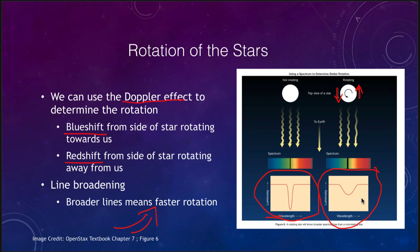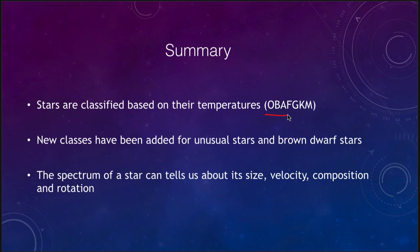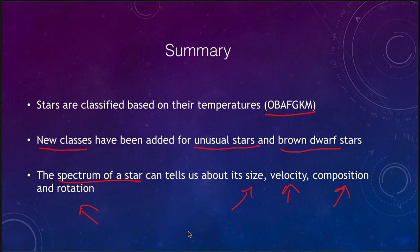So we can determine something of the rotation by looking at how wide the spectral lines are. To summarize: stars are classified based on their temperatures using the OBAFGKM classification. New classes have been added since that was developed in the late 1800s for more unusual stars and for the more recently discovered brown dwarf stars. The spectrum of a star tells us about the size, velocity, composition, and rotation of stars — just by looking at the spectrum we can determine a lot of things that would otherwise be very hard to find.